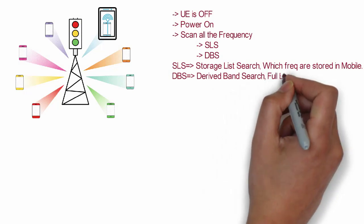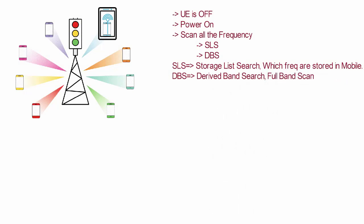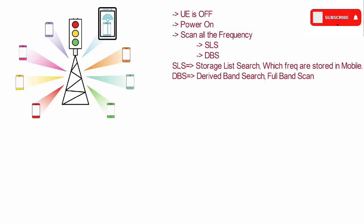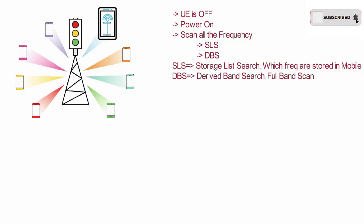DBS — Derived Band Search — is what happens if after the SLS search you didn't find any cell. Then UE will start DBS search, where it will scan all the frequencies for the whole band. If the storage list search finds no physical cell ID, UE starts DBS and scans all frequencies across the entire band.